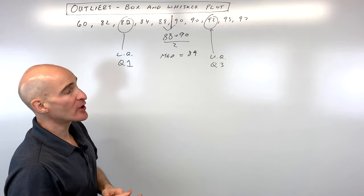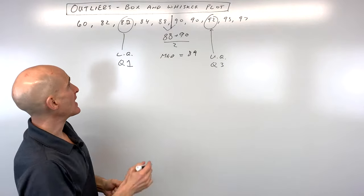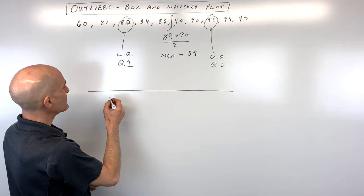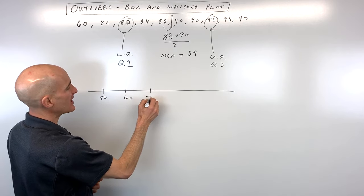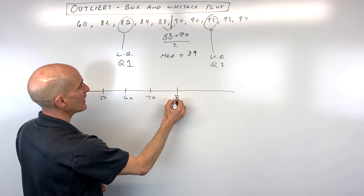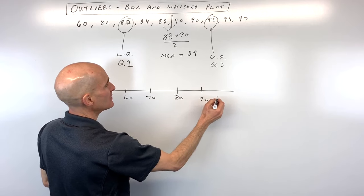So what we're going to do now is we're going to arrange our data on a number line. So I'm just going to make a number line like so, and I'm just going to start over here at like 50 and then 60. I'm just going to count by 10, 70, 80, 90, 100.